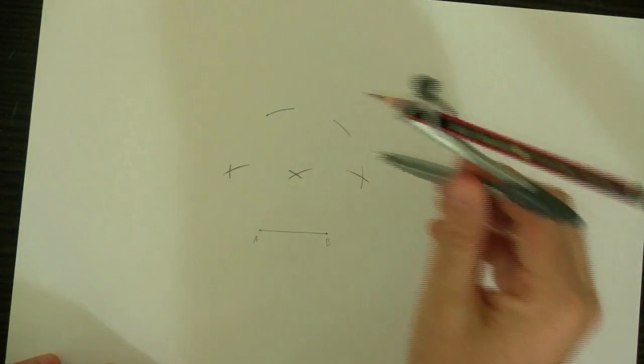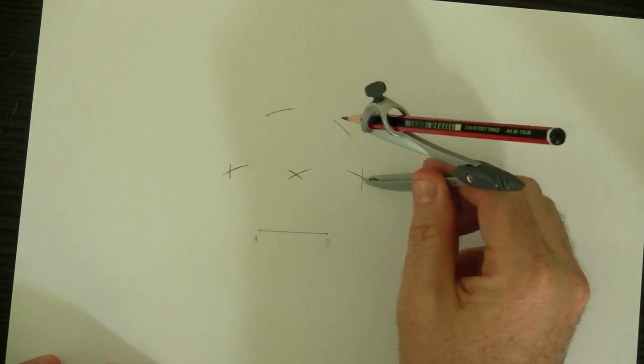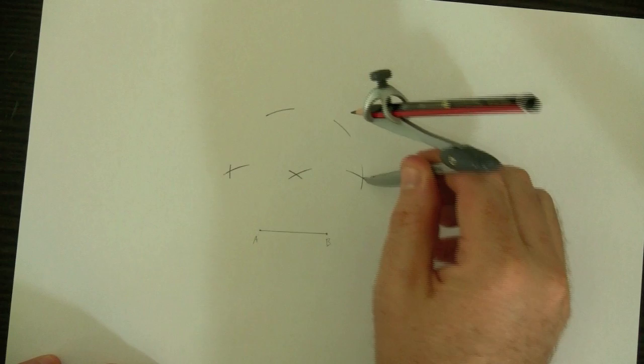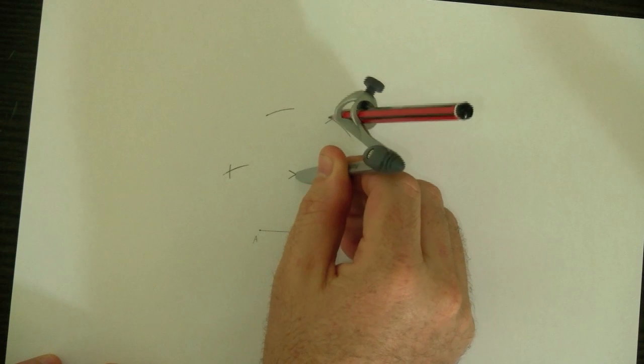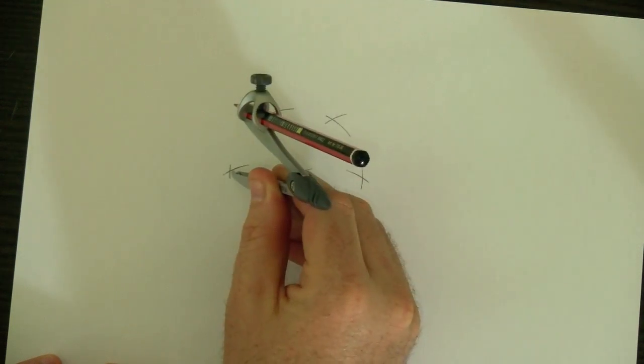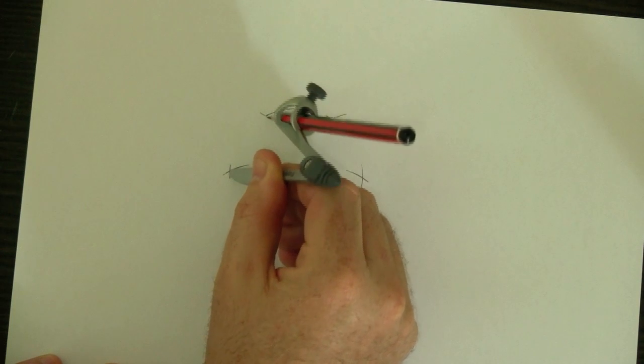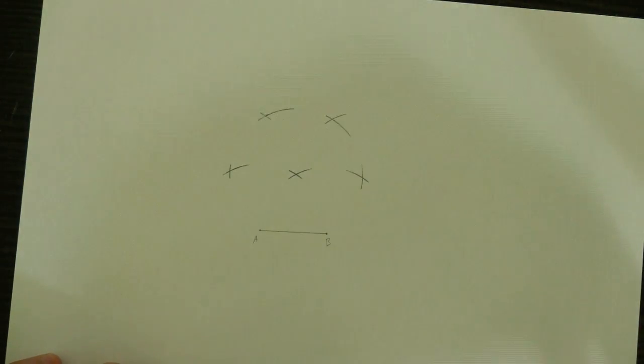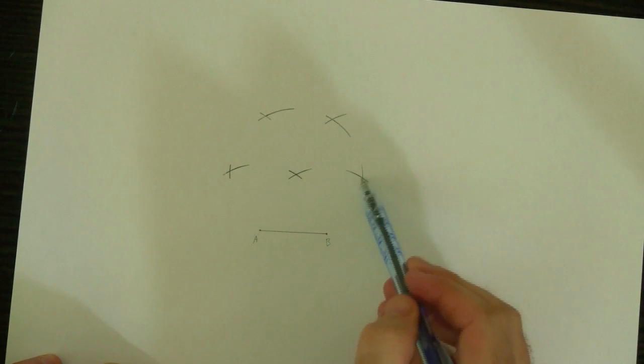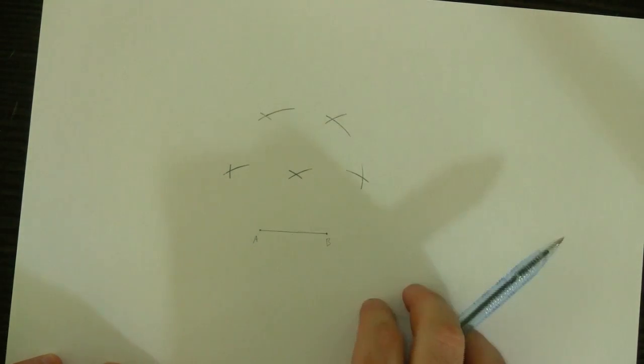So now we've got these two corner points of the hexagon, and there'll be two more corner points there. I should have made that arc a bit longer, and one more just there. So now we've got the center of the hexagon and the six points around the edge.